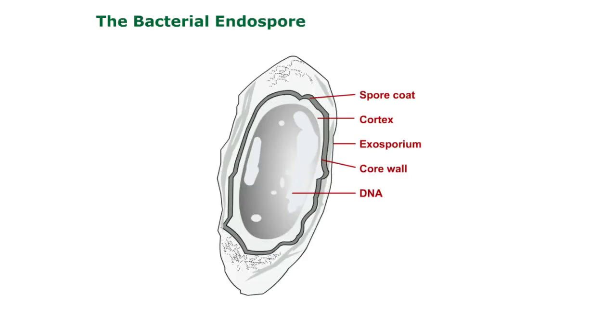Shown here is a bacterial endospore. Notice the spore coat, cortex, exosporium, core wall, and DNA.